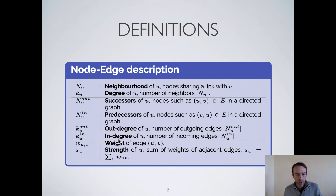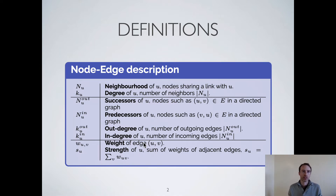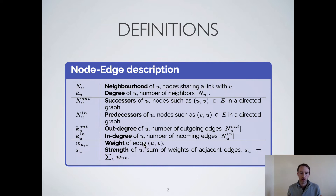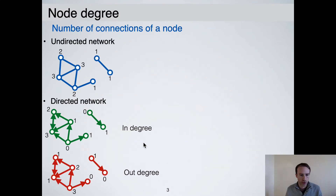We call the weight of an edge the value associated with it. For instance, in transactions you might have some value in dollars or in Bitcoin which represents the weight of an edge. The strength of a node is the sum of the weights of its outgoing edges. I will show you some pictures to clarify this.